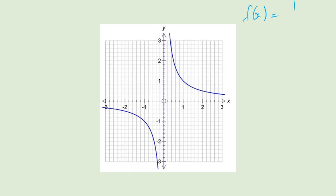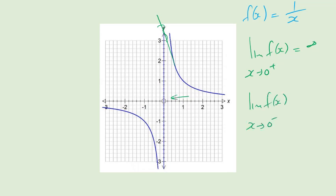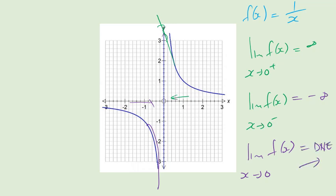Now let's look at f of x equals 1 over x. As x approaches 0 from the right, the graph shoots up to infinity and beyond — so the right-hand limit is plus infinity. As x approaches 0 from the left, the graph shoots down to minus infinity. So what can we say about the limit of f of x as x approaches 0? It does not exist.